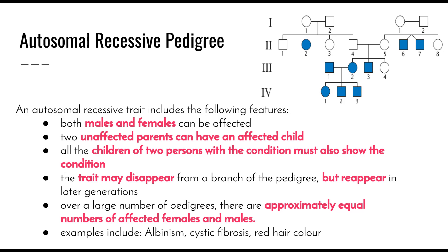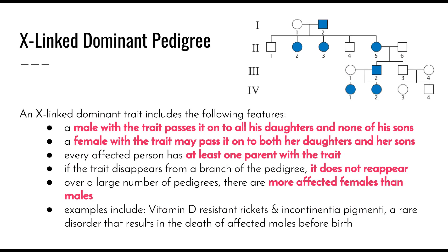Examples of autosomal recessive traits include albinism — where people completely lose pigment in their body and appear very pale — cystic fibrosis, which involves a build-up of mucus in the lungs, and red hair colour.